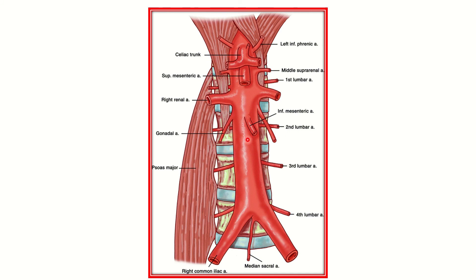The abdominal aorta is one of the most important topics for a MERCI exam from the abdominal section. The abdominal aorta starts from the thoracic 12 vertebra, where it leaves the thorax through the diaphragm via the aortic foramen, and it ends at the level of the lumbar 4 vertebra. Within this course, the aorta gives a lot of branches — almost all branches.